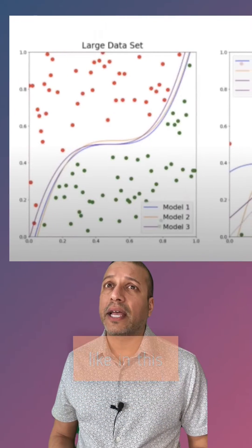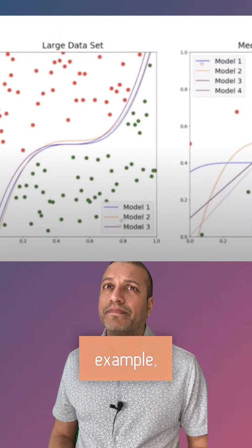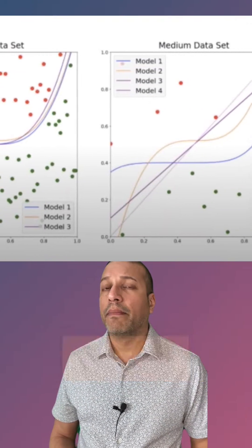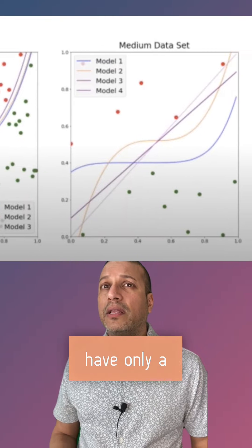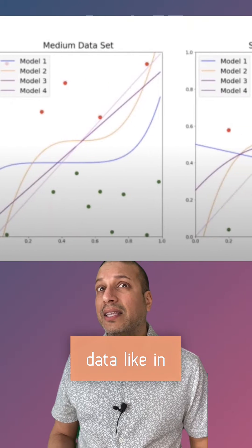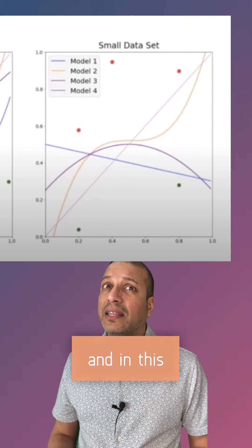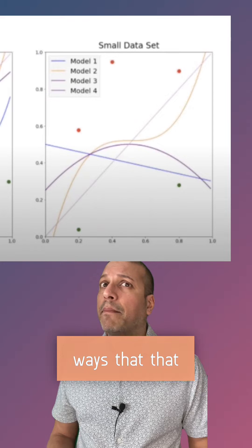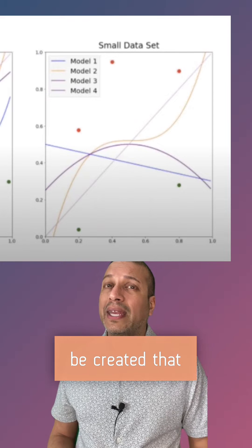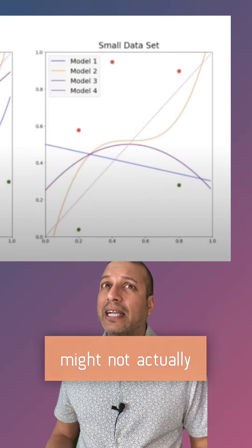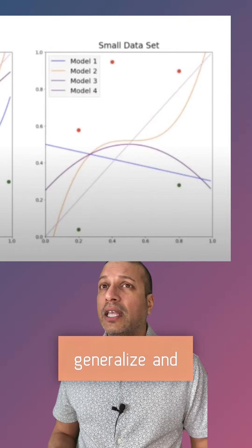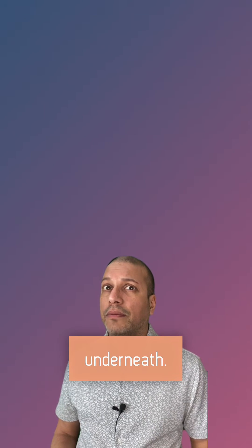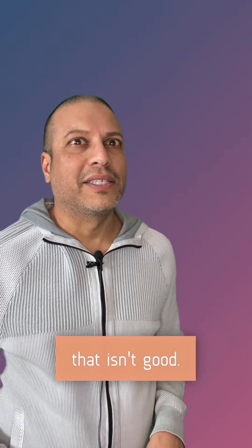If we had a lot of data like in this example, I wouldn't worry about overfitting, but when we have only a little bit of data like in this and in this example, there are a lot of different ways that model could be created that might not actually generalize and capture the true pattern underneath. Oh yeah, that isn't good.